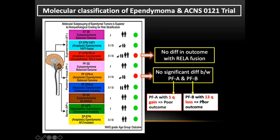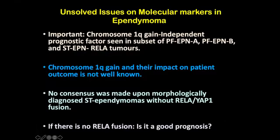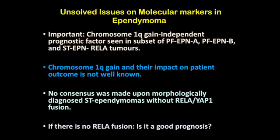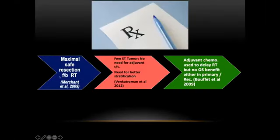There are certain unresolved molecular markers. The 1q gain is seen in PFA and is associated with bad prognostic outcome, but how bad remains uncertain. If RELA fusion is absent, does it become good? If YAP1 fusion is absent, does it become bad? These questions remain unanswered — making molecular classification an evolving field.